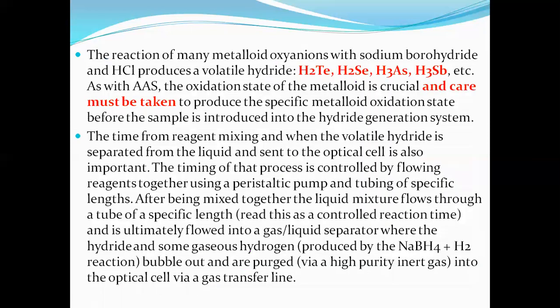The reaction of many metalloid oxyanions with sodium borohydride and HCl produces volatile hydrides such as H2Te, H2Se, H3As, and H3Sb. We generate hydrides of these metalloids because they cannot be directly analyzed by atomic absorption spectroscopy.